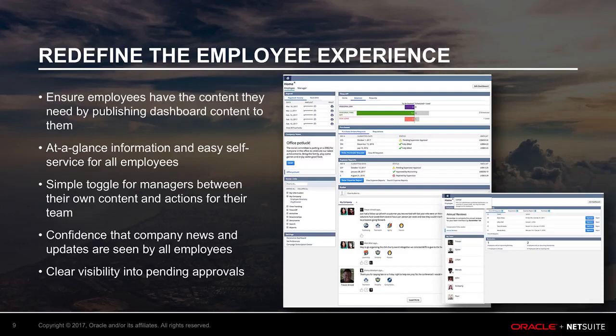There are three main areas to the employee center in the 2018-1 release: number one, employee center publishing; number two, employee manager toggle; and number three, new portlets. Employee center publishing allows HR and admins to publish content such as company news and updates, which are essential to keep employees updated and motivated on their dashboards. When the employee center publishing feature is enabled, the old employee center dashboard will be replaced with the new dashboard.